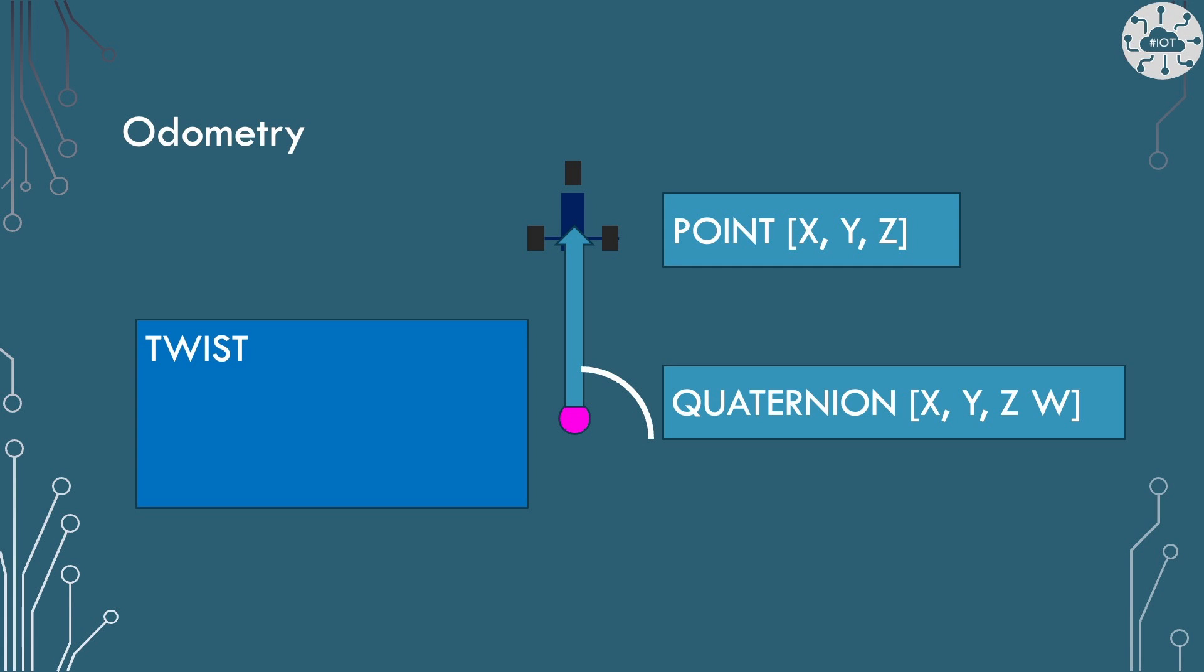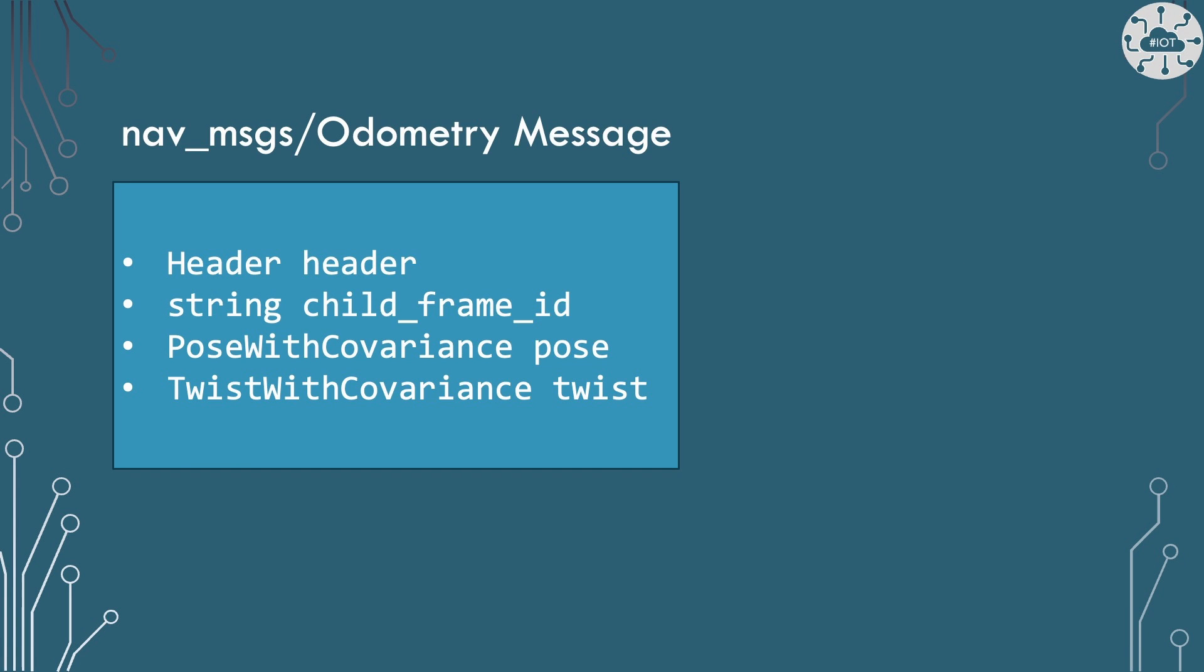Odometry messages actually also include twist data. So they also include velocity data around how fast we are moving in a linear direction and angular direction. So the Odometry message really has the header which is going to have that Odom base frame in it, a child frame which is going to be our base link, and then it has a pose and a twist.